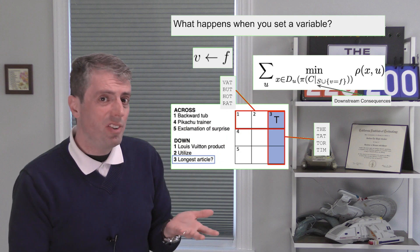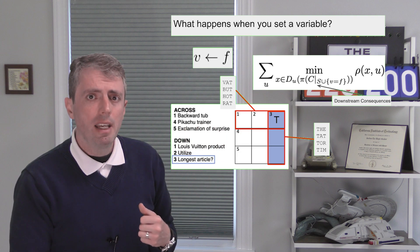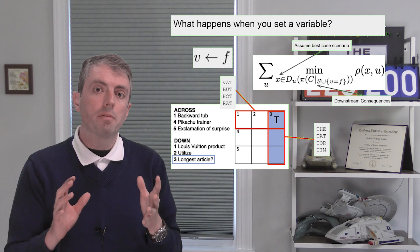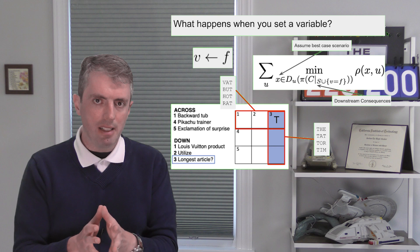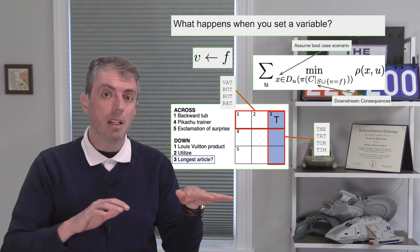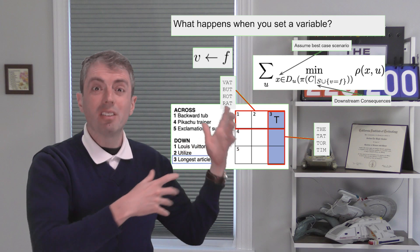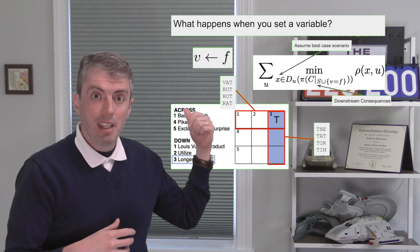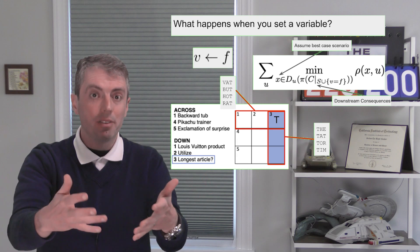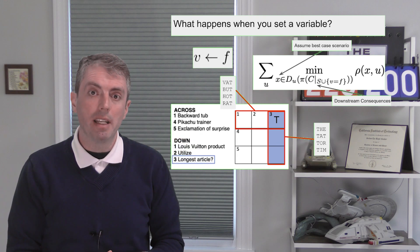Now there are lots of options here for each of these cells after you've made the assignment of T. So assume the best case scenario. In Dr. Phil, the objective function corresponds to the negative log probability. So the best case means minimizing all of the possible realizations of U that are still consistent with setting this one cell. Then you sum over all the cells that have some downstream consequence of the assignment that you're making.